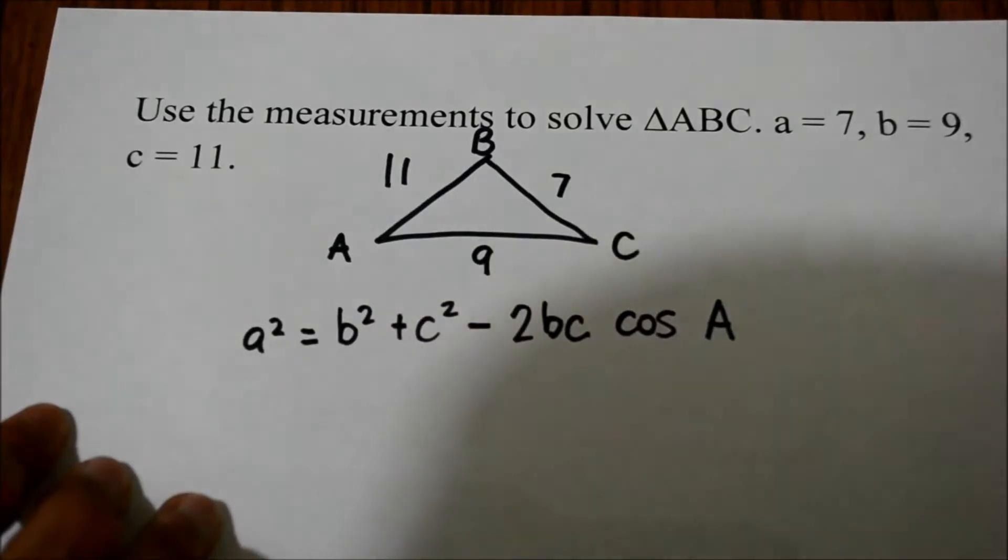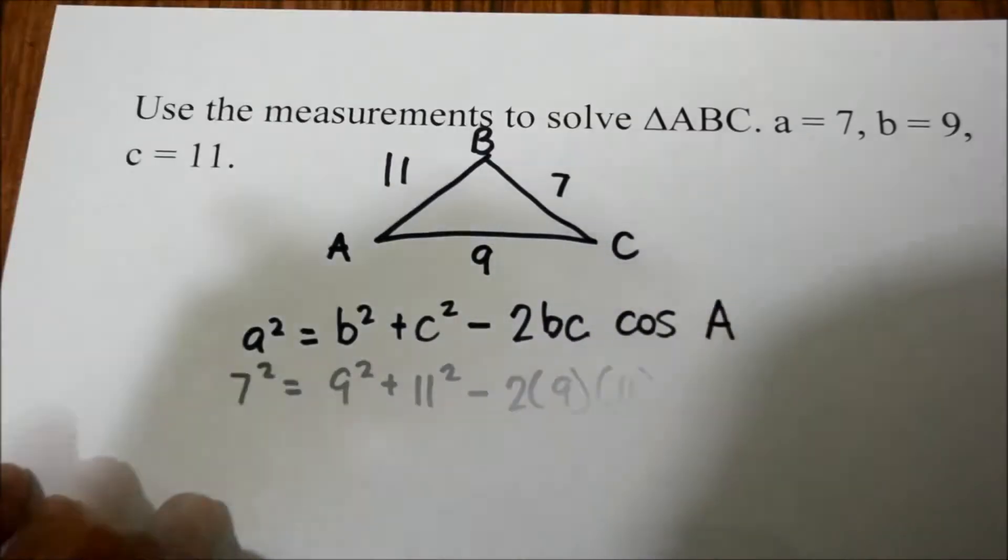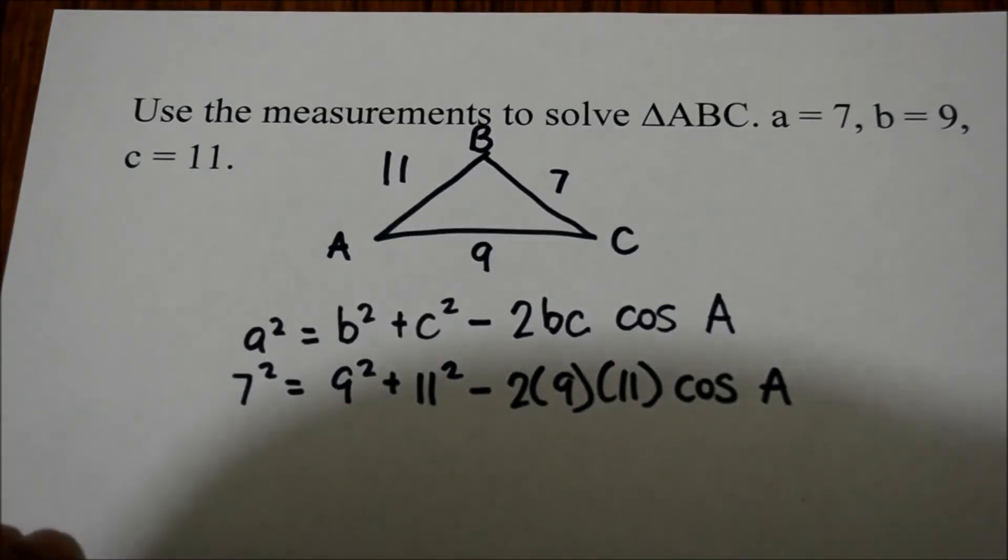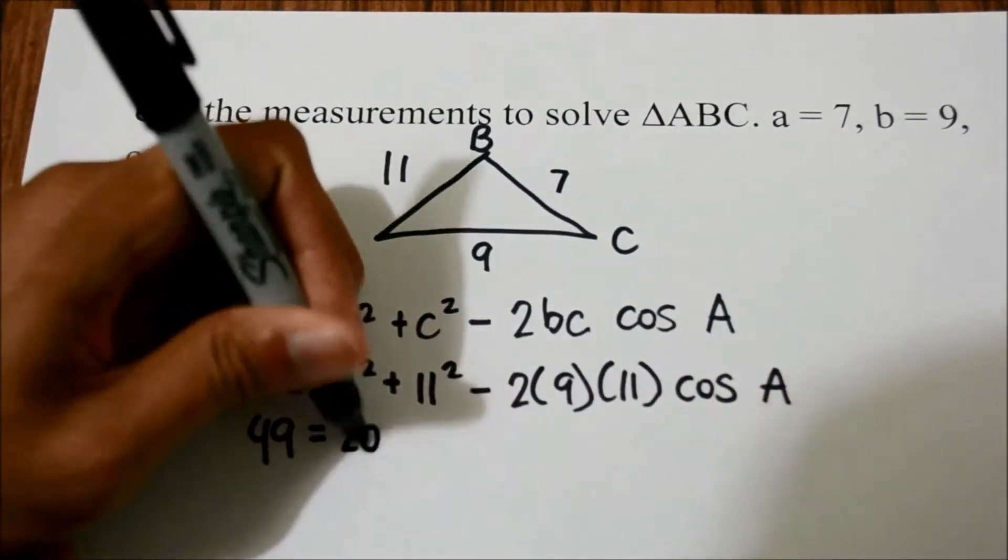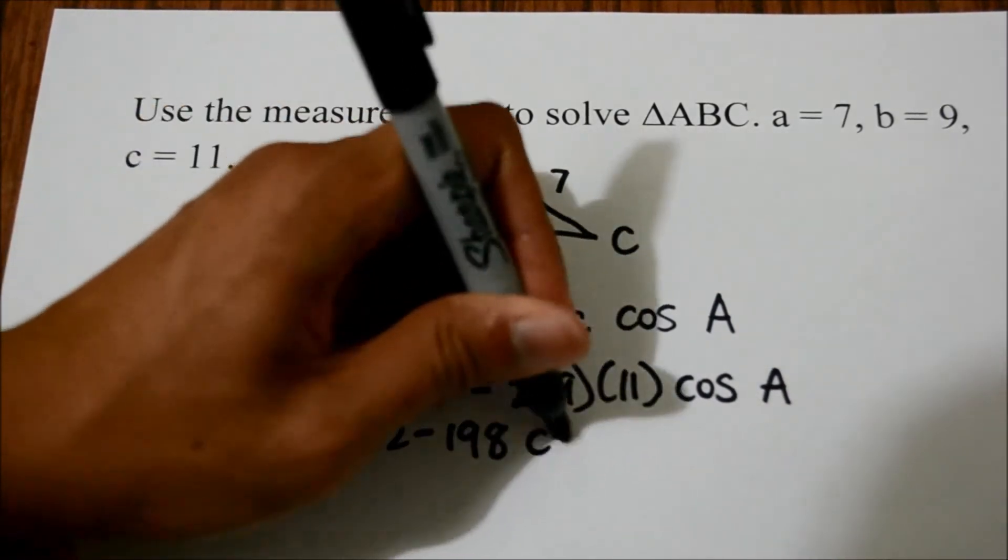We will substitute the variables with the given values and solve for cosine of A. We can simplify it to the form of 49 equals 202 minus 198 times the cosine of A.